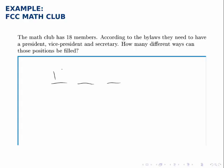That means there are 18 options for who can be president. Once there's a president though, there are only 17 people left to choose from for the vice president, and then 16 people left to choose from for the secretary. We multiply these options together using the fundamental counting principle. We get 4,896 possibilities for how many ways we could fill these three positions.